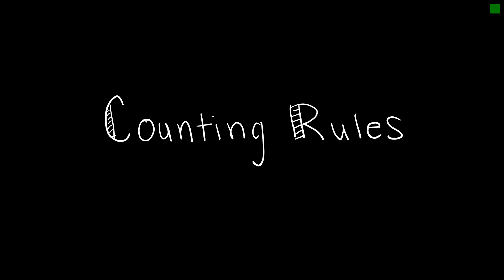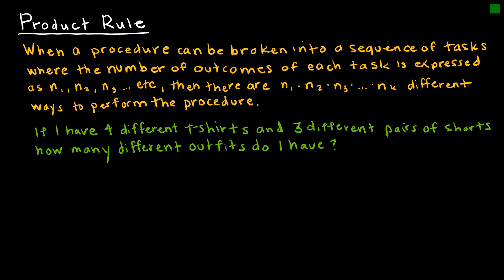This week our goal will shift to combinatorics, or being able to count the number of ways that something will happen. The first thing we want to look at is some counting rules. The product rule occurs when we have a procedure that can be broken into a sequence of tasks where the number of ways to perform each task is expressed as N1, N2, N3, etc. Then there are N1 times N2 times N3 times Nk different ways to perform the procedure. That's just fancy math talk for saying if you've got something that can be performed a bunch of different ways, then multiply those ways.